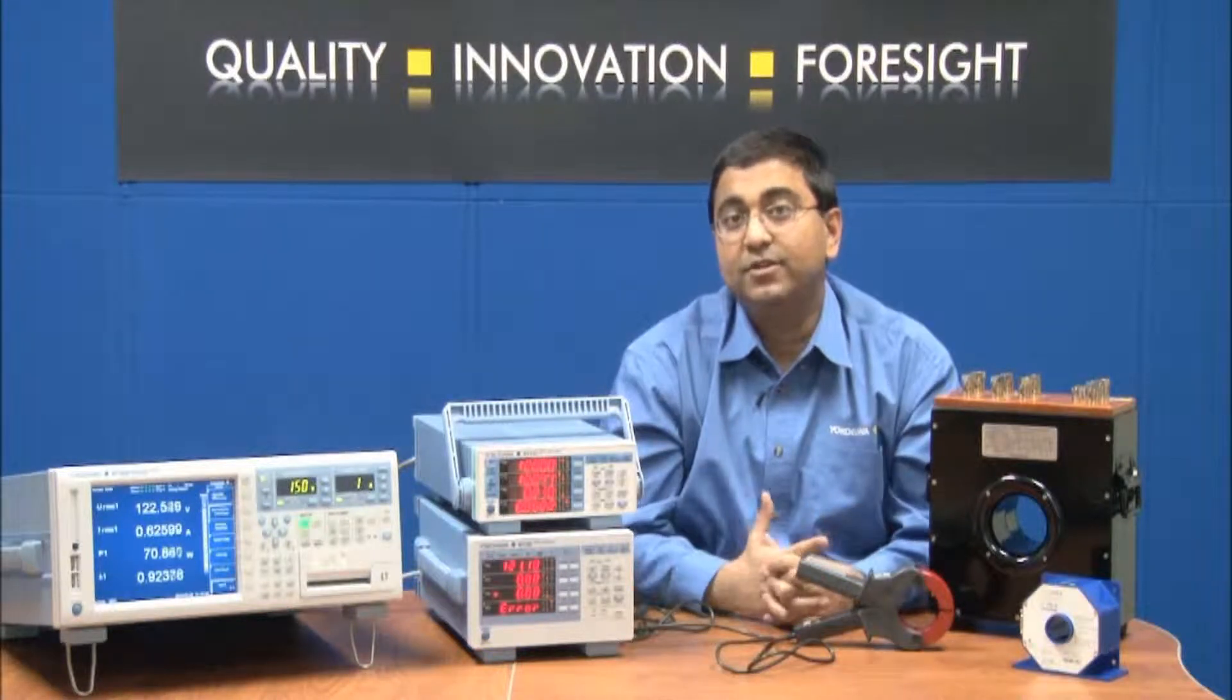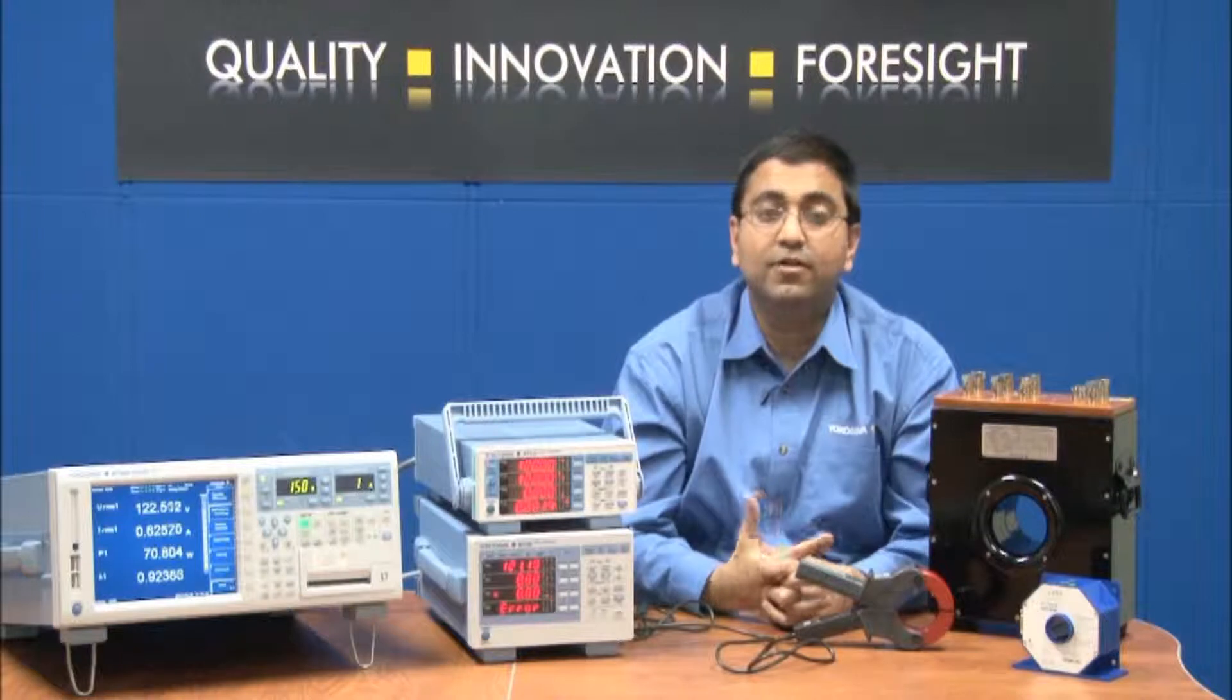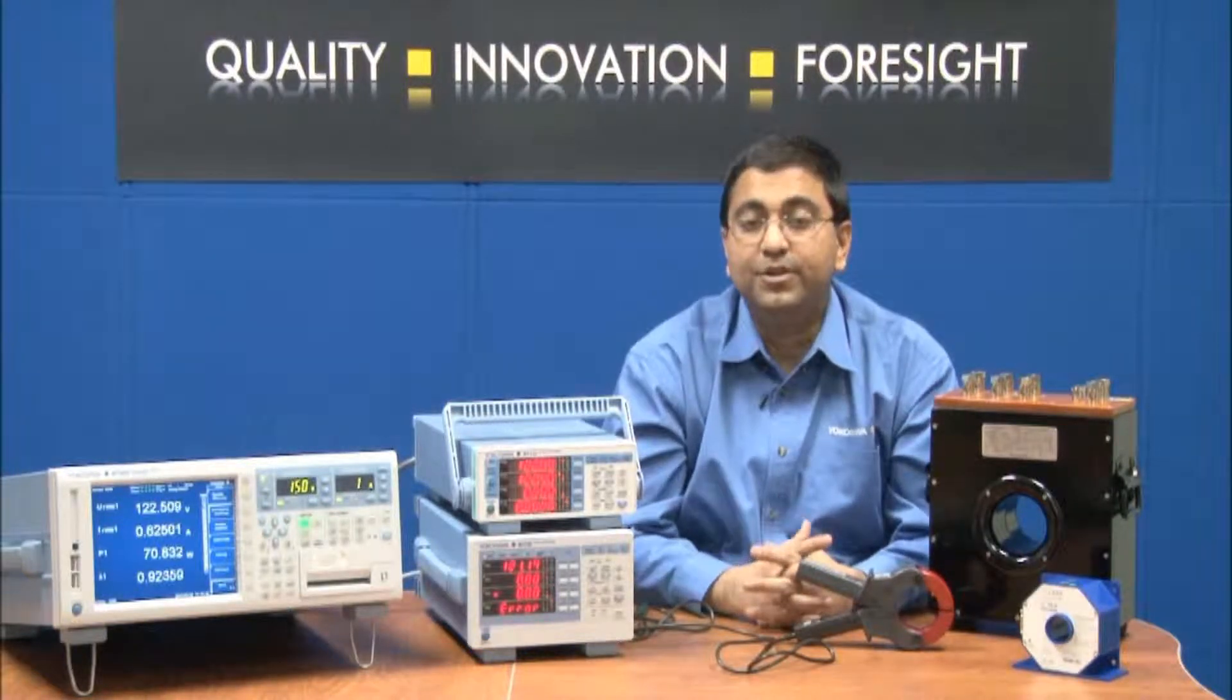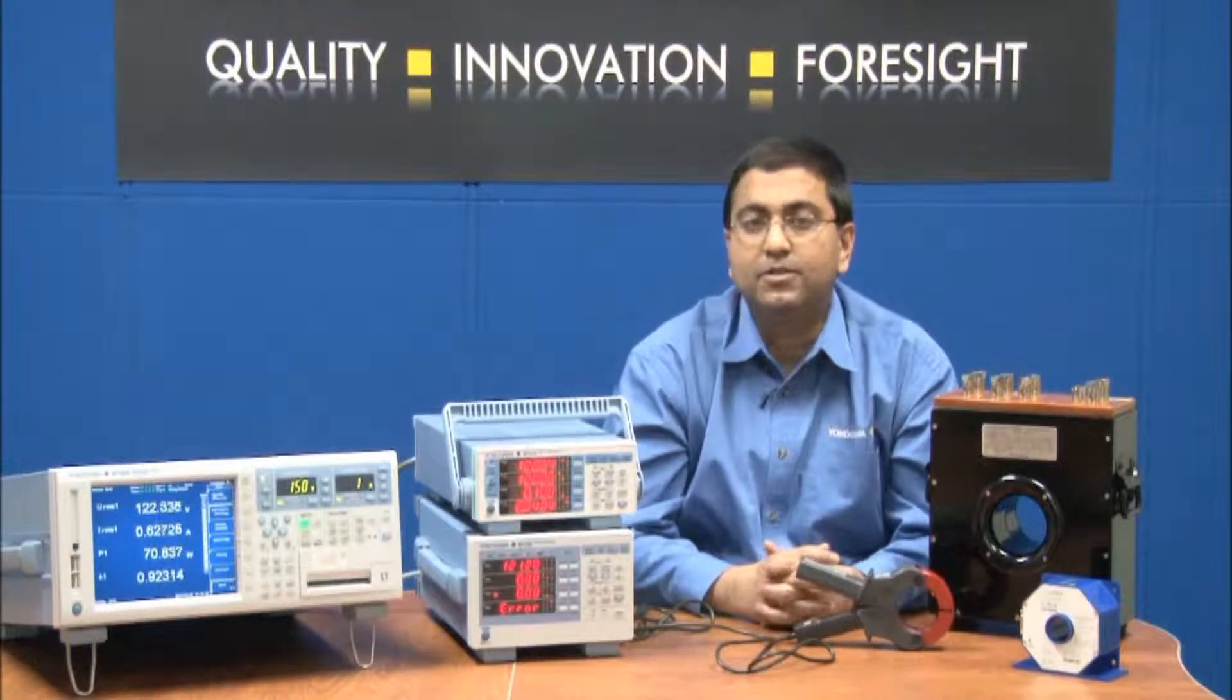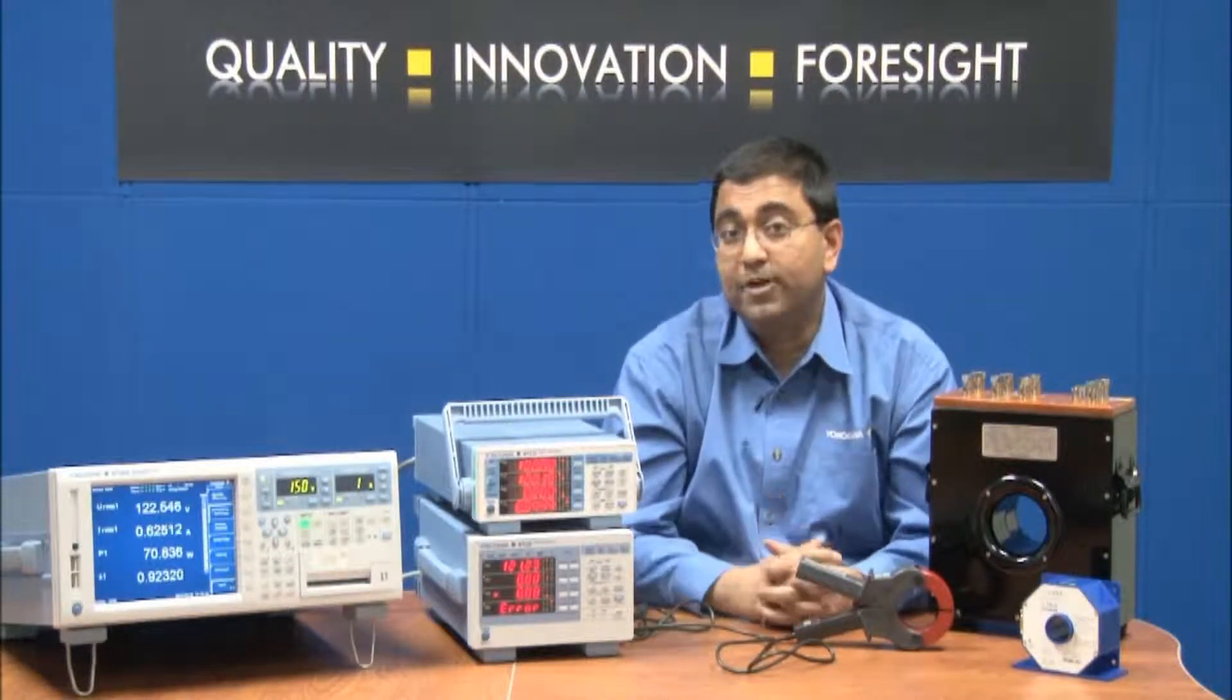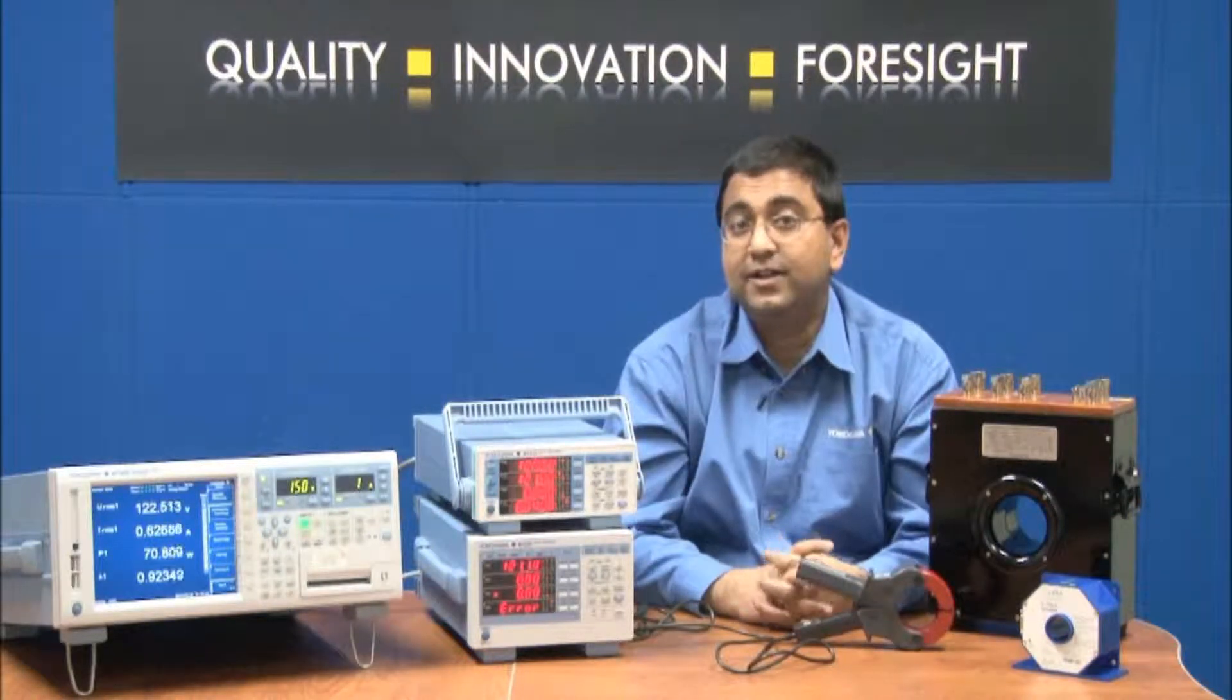Today we are going to take a look at how to make accurate current measurements. The question that often troubles design engineers is where in the circuit do you make your current measurements? How do you minimize the effects of input resistance of the measuring device and subsequent power losses on the overall measurement accuracy? My next two cases should hopefully answer that for you.